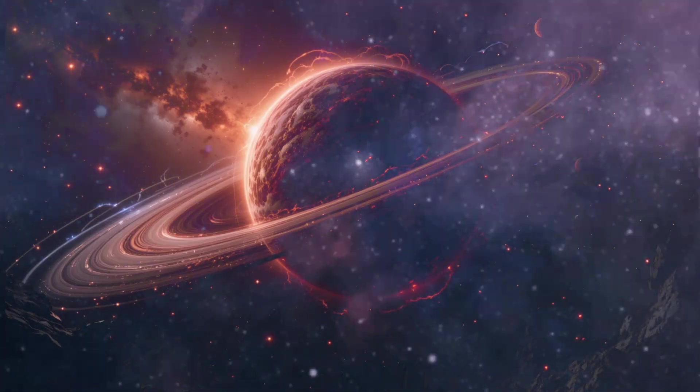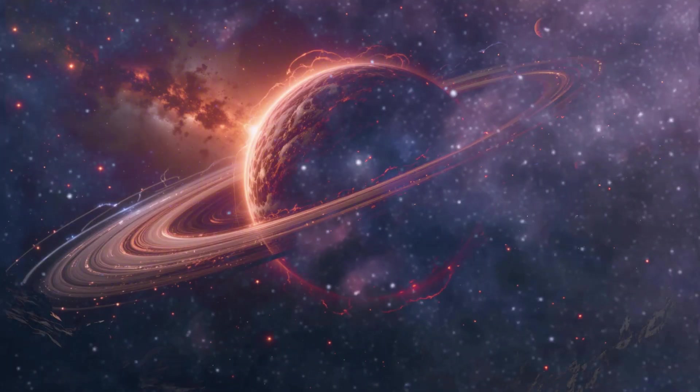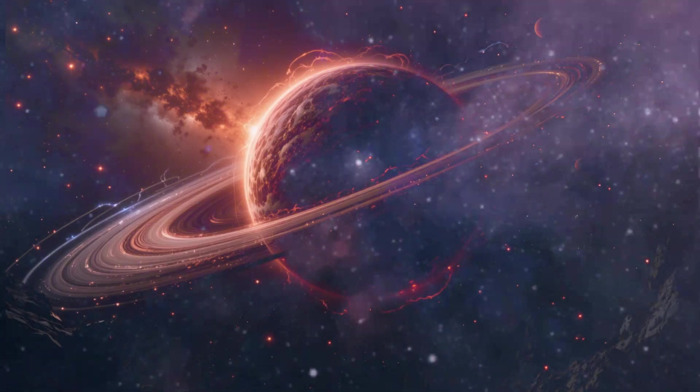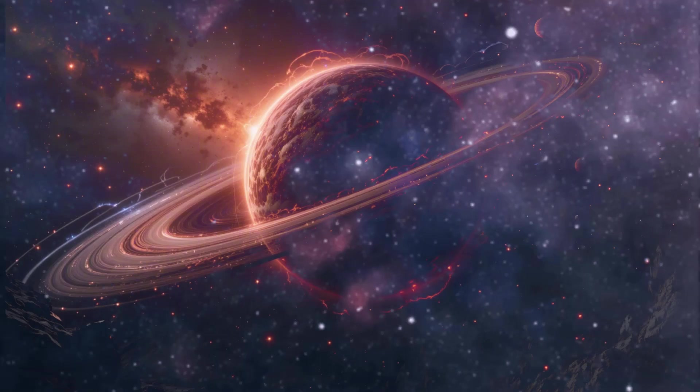Stars nearing the end of their life cycles often exhibit such irregularities before their demise. NASA has expressed greater concern about Betelgeuse, but formal attention has yet to be fully directed toward Polaris. As a Cepheid variable star nears the end of its life, it goes through several stages, including the red giant phase, and ultimately ends in a supernova explosion.